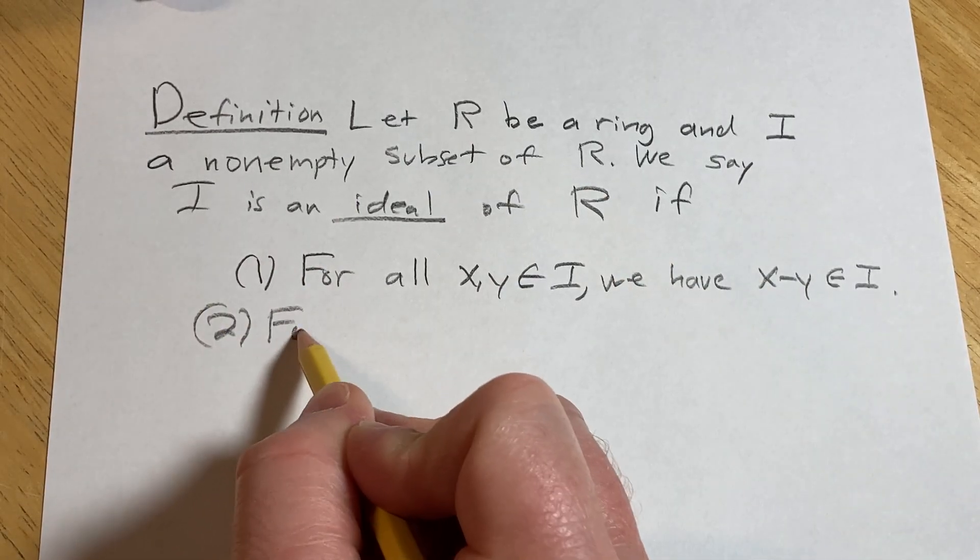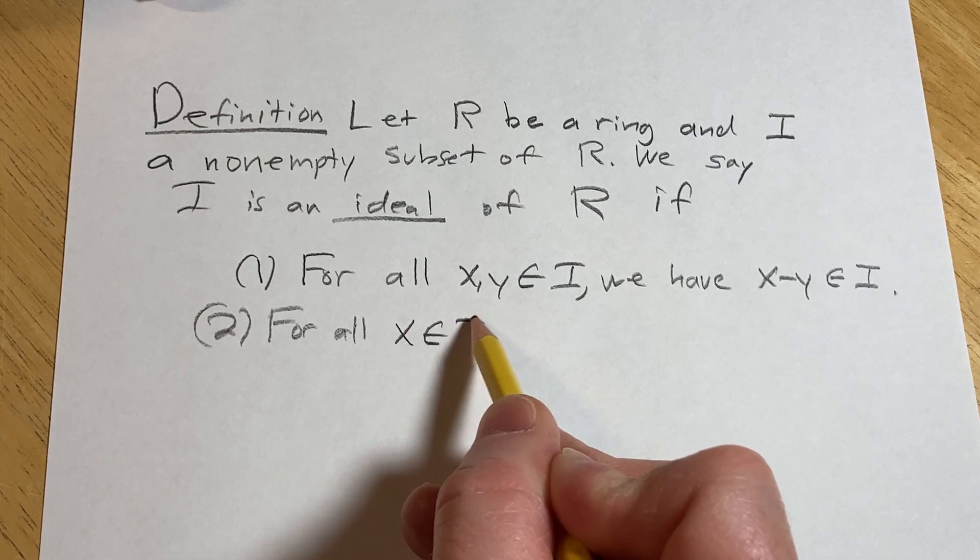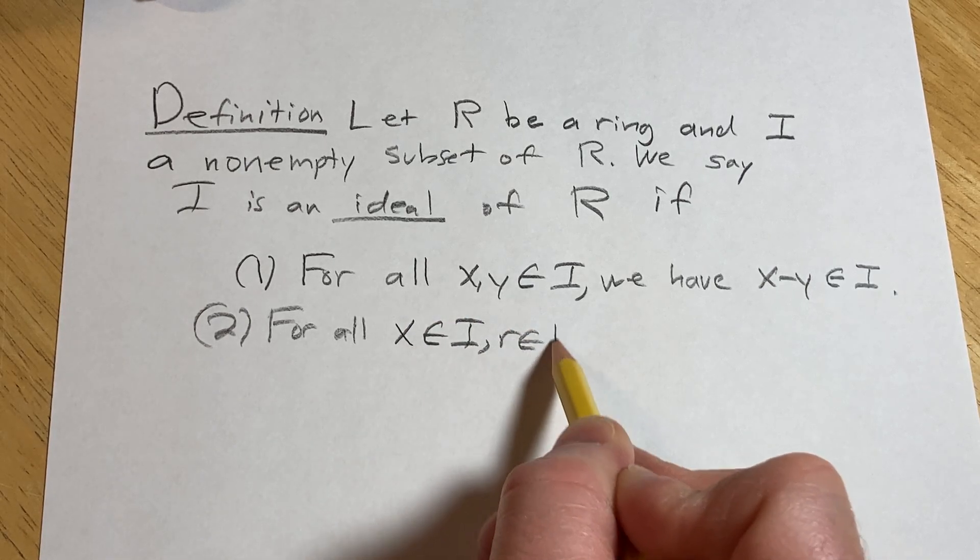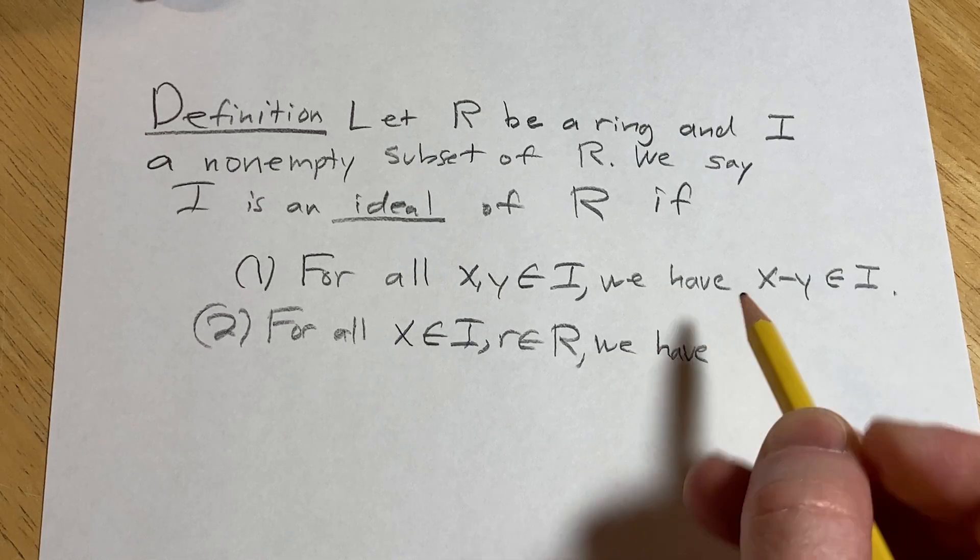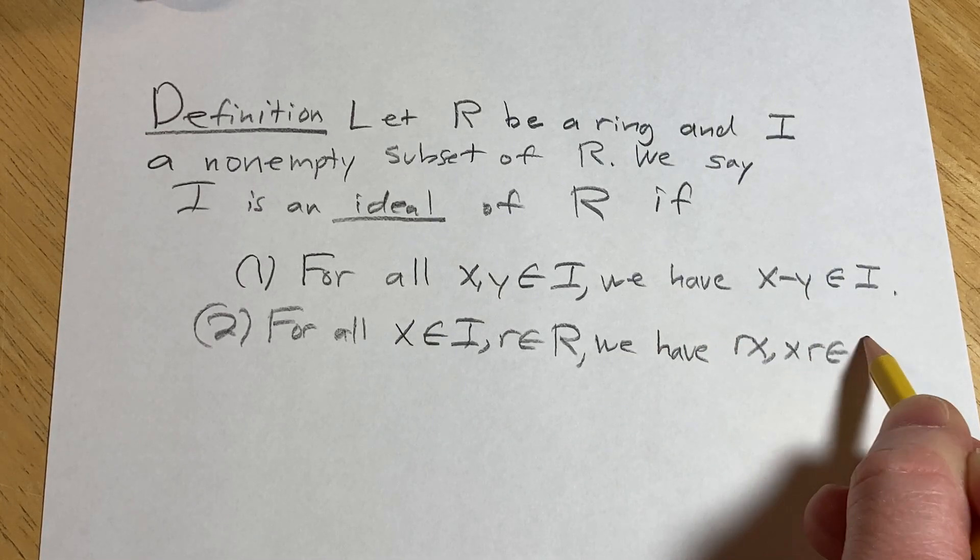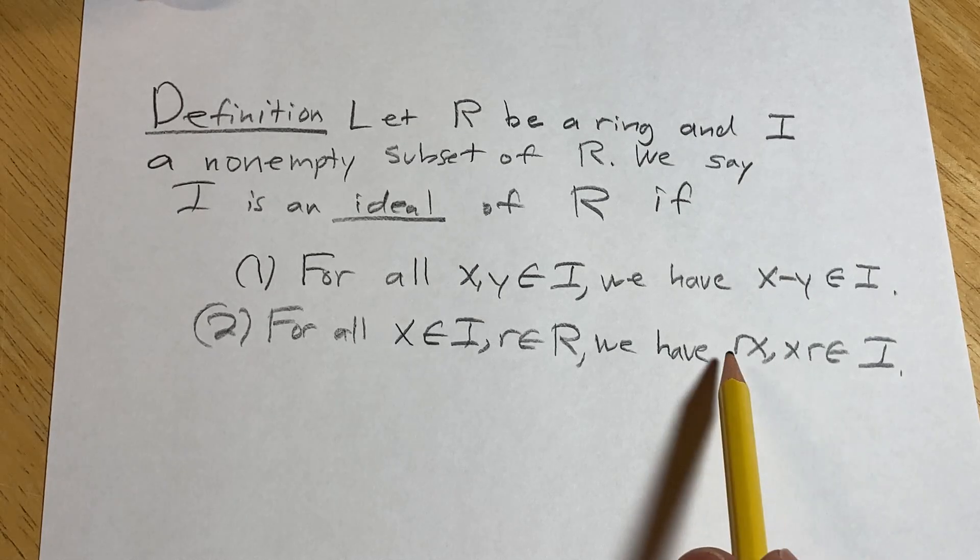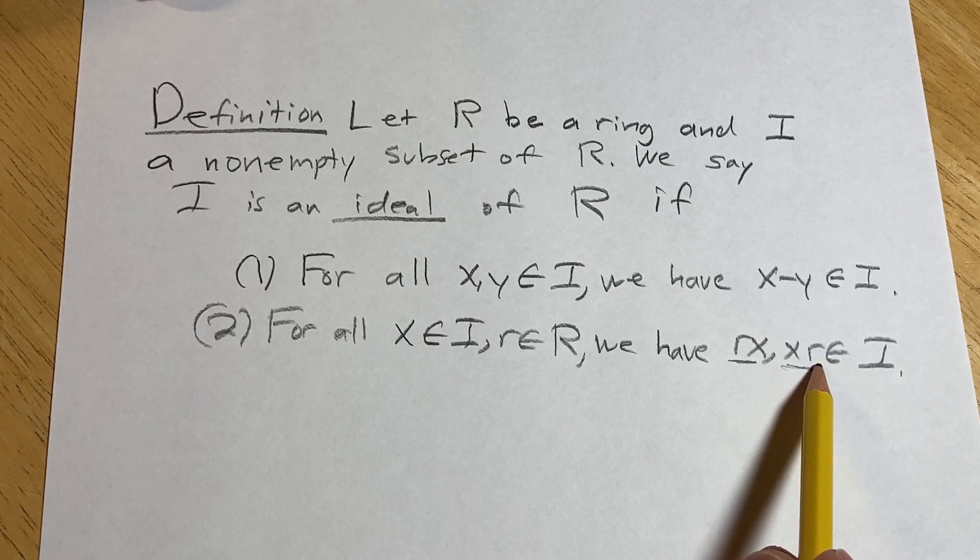Two. For all x in I and r in R, we have rx and xr both in I. So you can guess it, this would be the definition of left ideal, this would be the definition of right ideal.